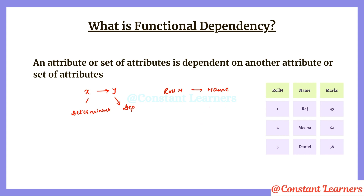Functional dependency exists only under two conditions: when the determinant — roll number — is entirely unique with no repetitive values, we don't care whether the dependent has repetitive values. Every determinant should give a unique value of the dependent; we cannot get two different values for the same determinant. For example, if there is another row with roll number one, the name should be Raj only — the same as before. If instead it were a different name, the functional dependency would not exist.